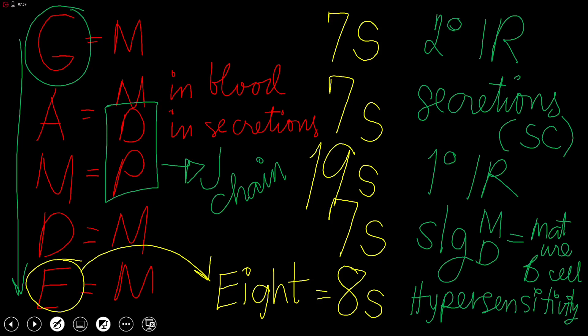What else? So we mentioned also the coefficient of sedimentation for almost all is 7S except for IgM, which is 19S, and IgE, which is 8S. For their function, we have IgG predominant in secondary immune response, IgA found in secretions, IgM predominant in primary immune response, IgD is found on the surface of a mature B cell along with IgM. And IgE will be mediating the hypersensitivity reactions.